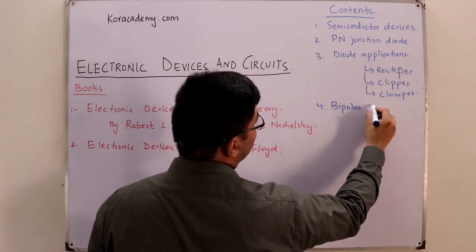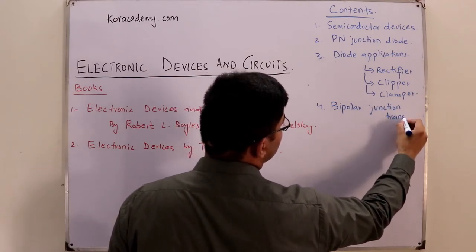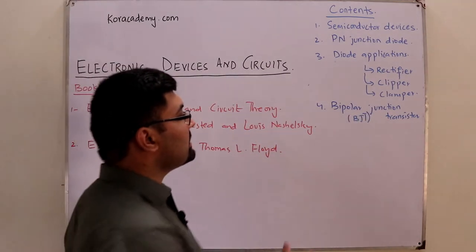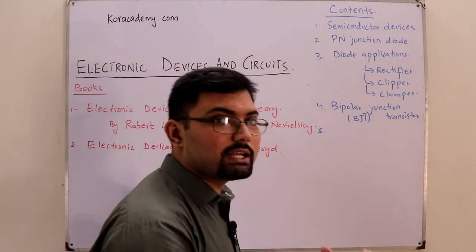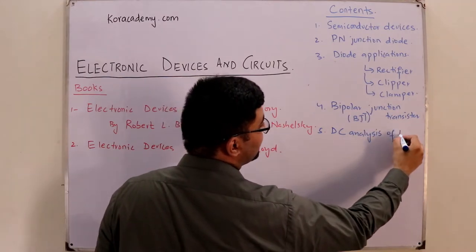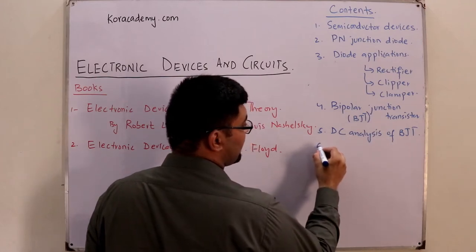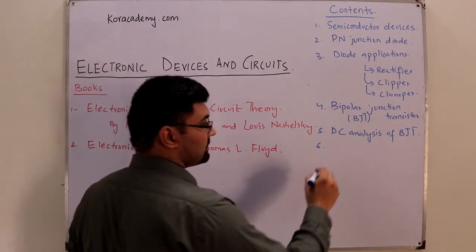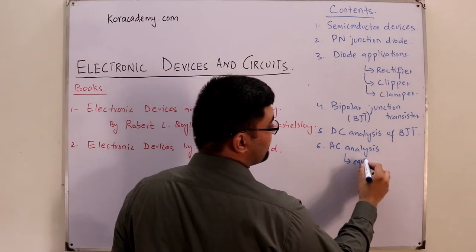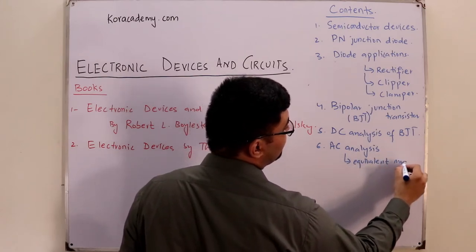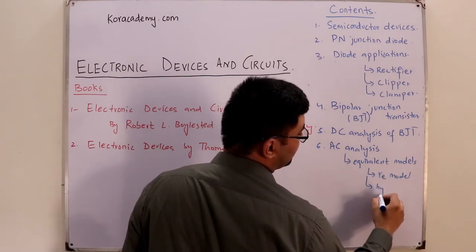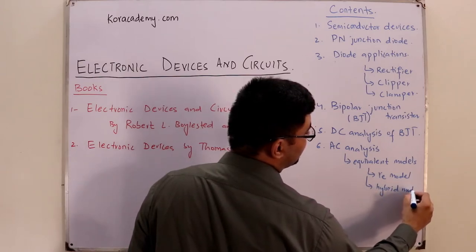When we are done with the diode, then we would make a bipolar junction transistor, which is called in short a BJT. When we are done with a BJT, then we would apply signals to it. First we would study the DC analysis of BJT, which means applying a DC signal to our BJT. Finally, we would study the AC analysis, which means applying AC signal to our BJT. In this we would be covering some equivalent models as well, including the RE model and the hybrid model.